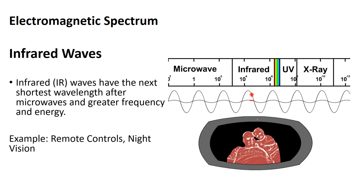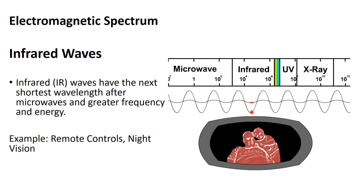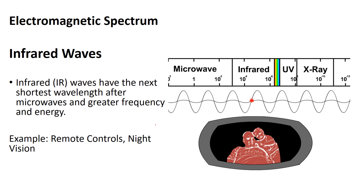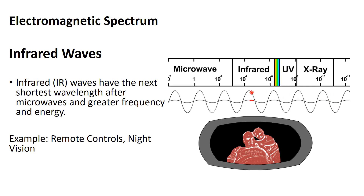Infrared waves have a little bit more energy and a little shorter wavelength. These are often used for remote controls and night vision. If you have a remote control where you need a direct visual line to a device, it's probably infrared. If you can go through a blanket, it's probably a Wi-Fi remote. Night vision detects the heat — the infrared coming from individuals and mammals.